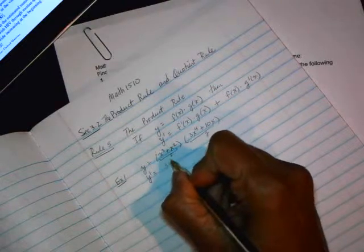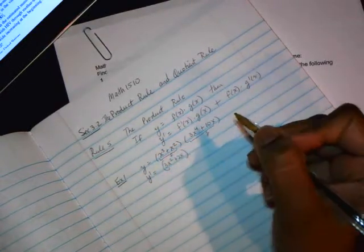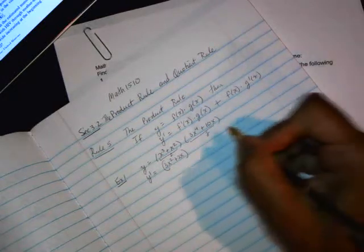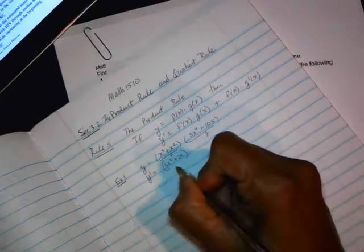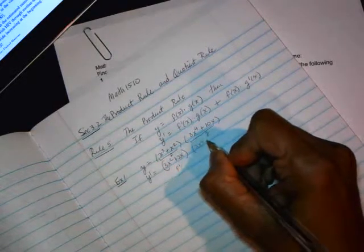so you get 3x squared plus 2x. Now, it is very important that we use parentheses or else the order of operations would be off. So this is f prime. And then you copy g as is, 3x to the 4th plus 10x.